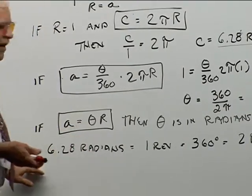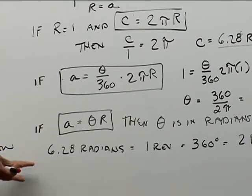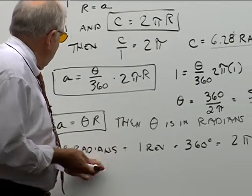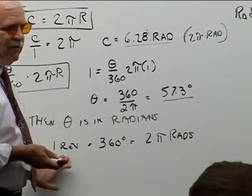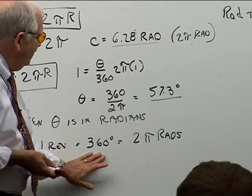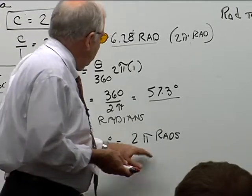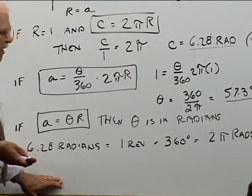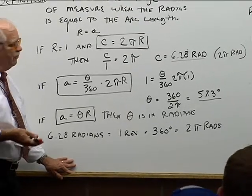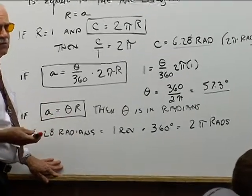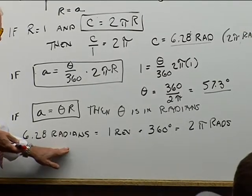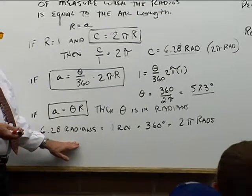And finally, to write a couple of things to put it all together, we have 6.28 rads is equal to 1 revolution, which is equal to 360 degrees, which is also equal to 2π rads. So you can see this expression here, especially for conversions, when we want to move from degrees to rads and back and forth. So that's why this rads is important.